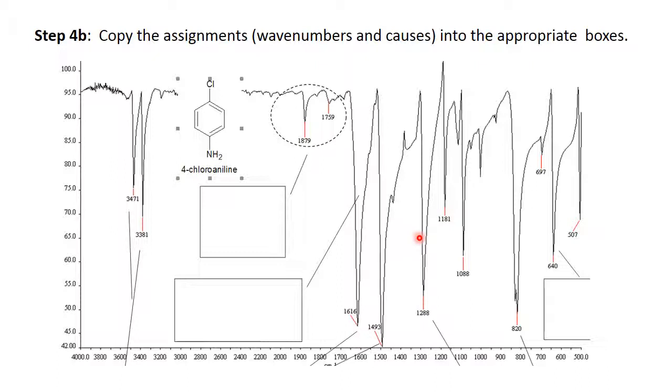At 1288 this looks like the C to N stretch somewhere between 1265 and 1340, and then the out of plane NH band is pretty much lost here and so these other bands are associated with the halogen and with the para-disubstitution of the aromatic ring.